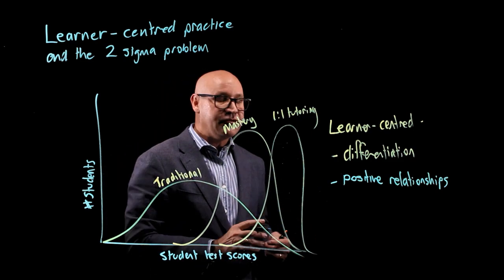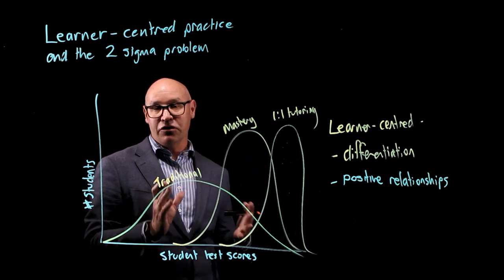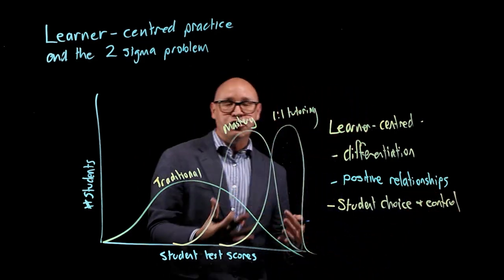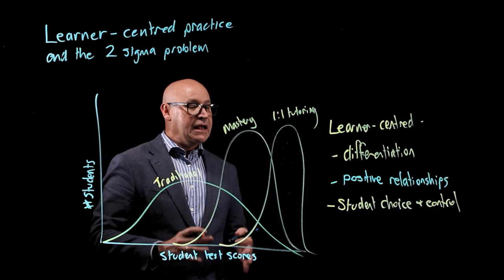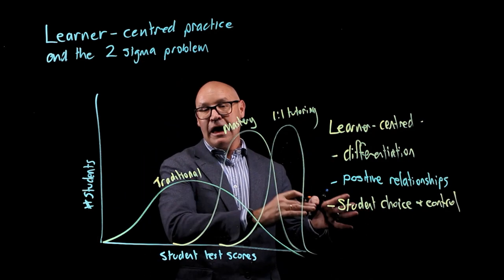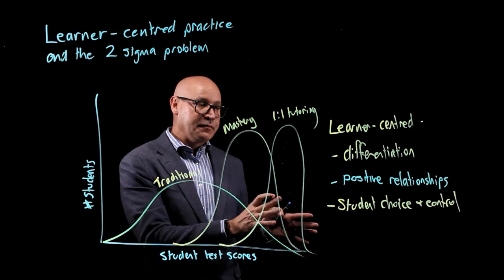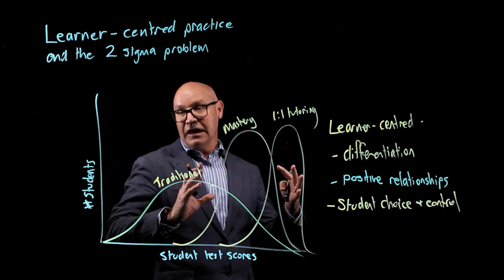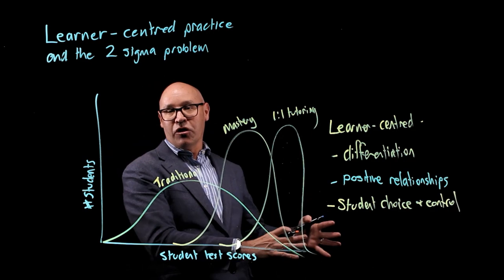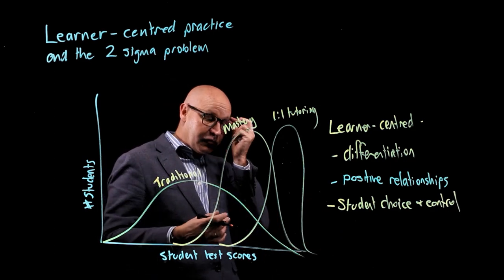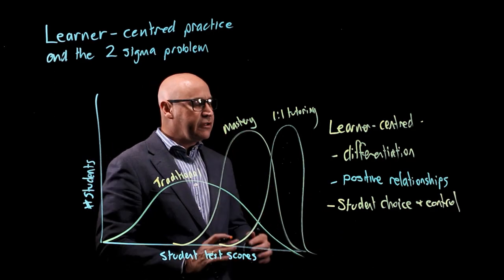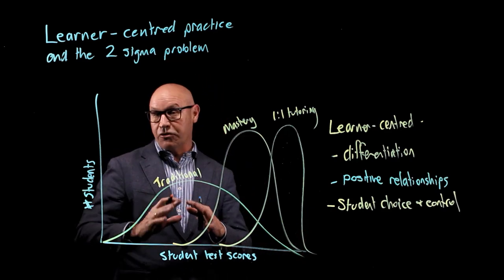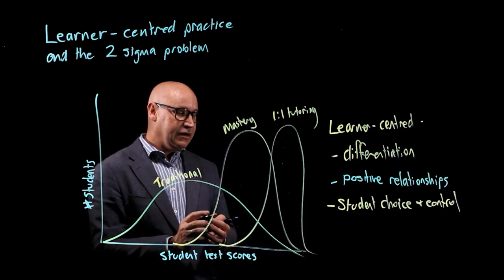The next one is about providing students with choice and control of their learning. Students are more motivated to learn if they're given some choice and control, and with flipped learning students are allowed to do that — particularly in the individual space, they're in control of when they learn and the pace at which they learn. That also happens in the group space with collaborative activities.